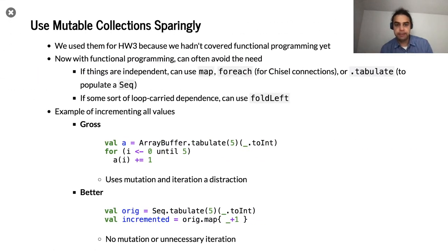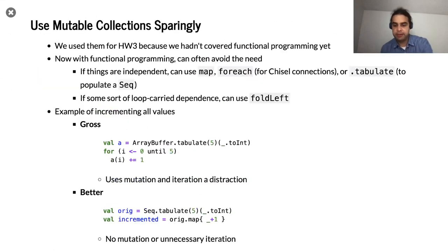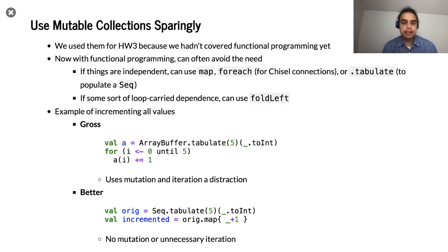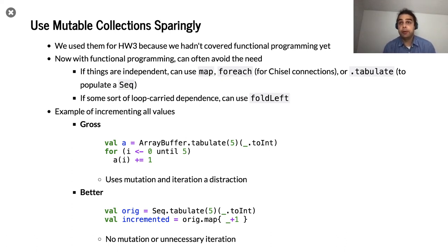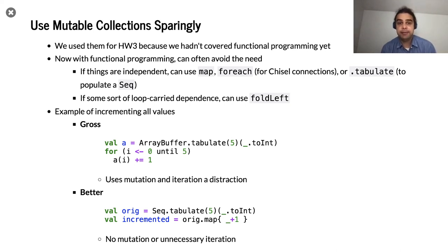On the same vein, var handles a single mutable thing. Alternatively, we've also come across mutable collections, which we used in homework 3 because we hadn't covered functional programming yet, but in general you should use them pretty sparingly. Functional programming can really avoid the need for them. If things are independent, we can often get away with map or forEach. For collections that exist, things like Seq.tabulate or Seq.fill for example.